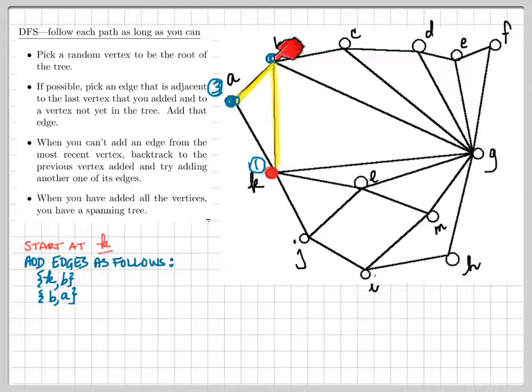So we backtrack to vertex 2, which is B, and we see that there are options to be added. So let's go ahead and add the next possible vertex. I'm going to add the vertex C. So the edge BC gets added to our tree, and C becomes the fourth vertex added.